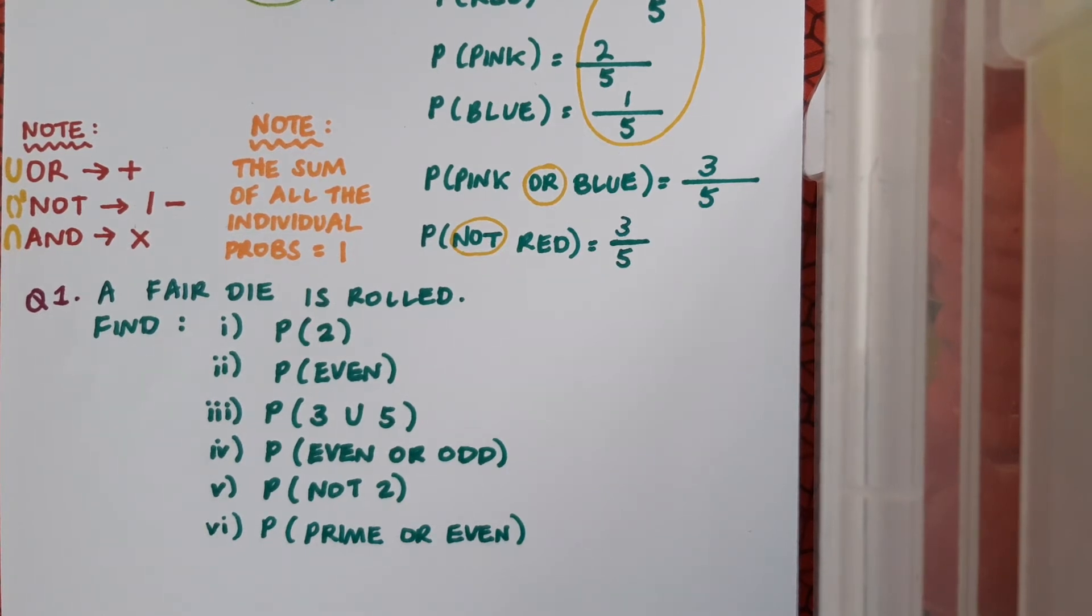Okay, so there's six sides on my die, and since it's only one two, the probability of getting a two must be one over six.